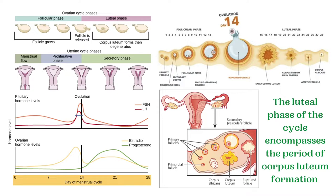The luteal phase of the cycle encompasses the period of corpus luteum formation and its subsequent regression. The corpus luteum forms at the end of the ovarian cycle from the remnants of the ruptured ovulatory follicle.